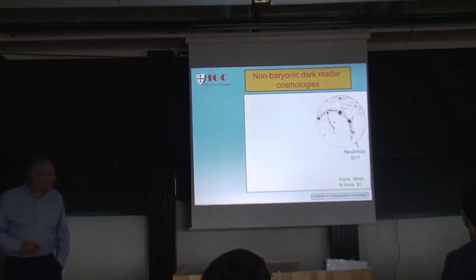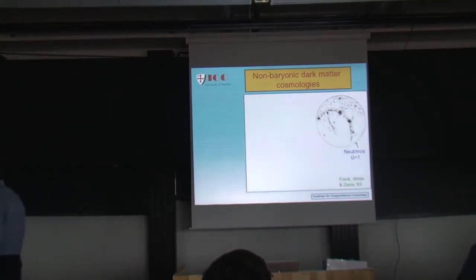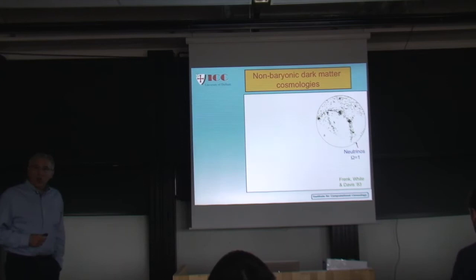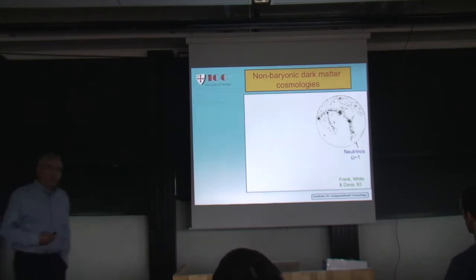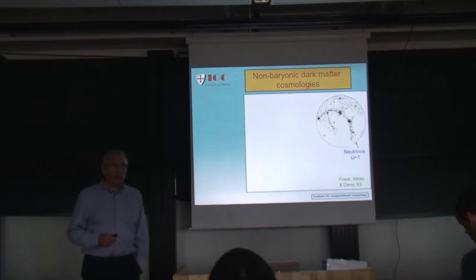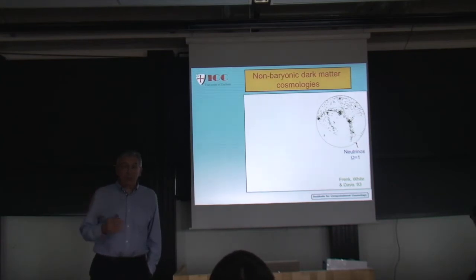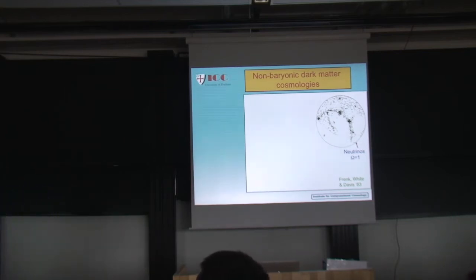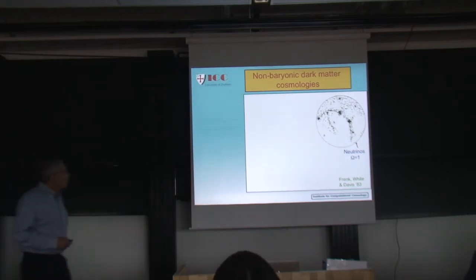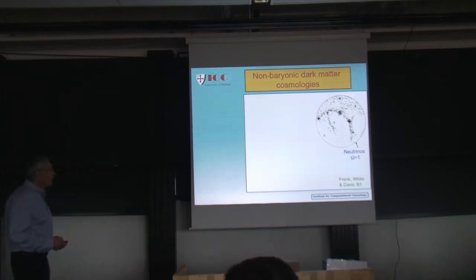That program was started in 1983. These are the first simulations — actually, the very first simulations were done behind the Iron Curtain by Klypin and Shandarin; it was difficult to talk to those guys in those days. So these were the first in the West showing what the universe would look like if the dark matter was a hot particle, a neutrino with a mass of tens of electron volts. There was actually a rumor that filtered through the Iron Curtain that a Russian experimentalist had measured a neutrino mass of 30 electron volts, and this is what the universe would look like — nothing like the universe as we knew it in the 1980s.